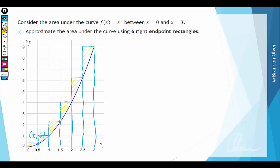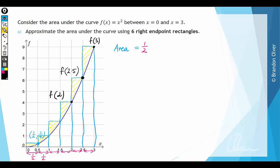Let's go through and calculate the area. The right rectangle approximation is always length times width. The width of every single one of these rectangles is 0.5, so we can factor that out and multiply everything by 0.5. Then at each right endpoint, the height is just found by evaluating f(x) at that point — so we evaluate f(0.5), f(1), f(1.5), f(2), f(2.5), f(3) and add them all up.